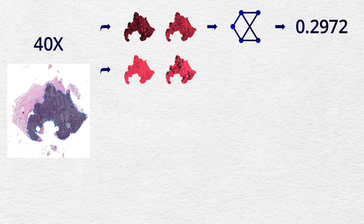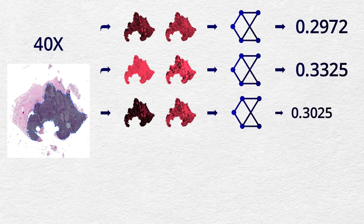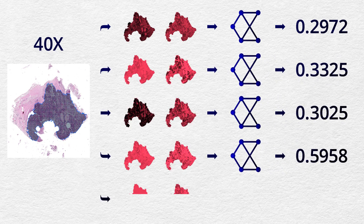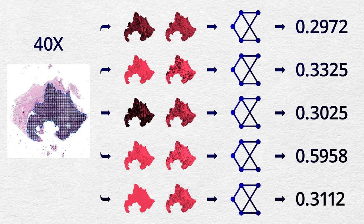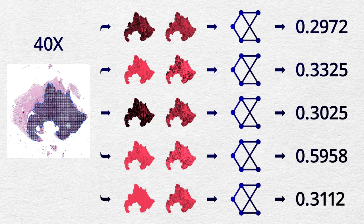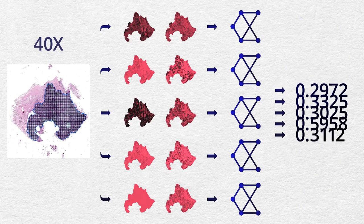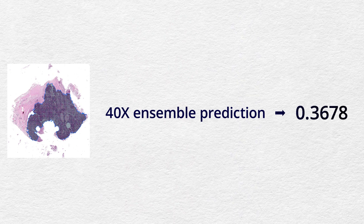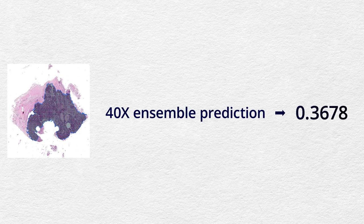For each resolution, there is an ensemble of five trained models, created by five unique training runs. Due to random initialization and sampling, each trained network is unique. When applied, they produce five different predictions of poor prognosis. The five 40x predictions are averaged and the result is a new predicted probability of poor prognosis, termed the 40x ensemble model prediction.